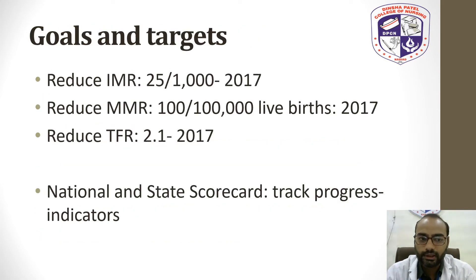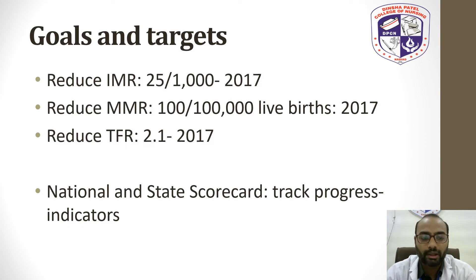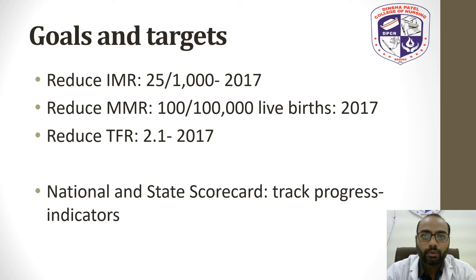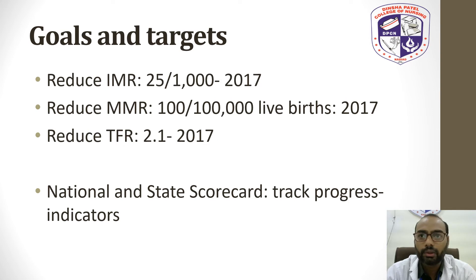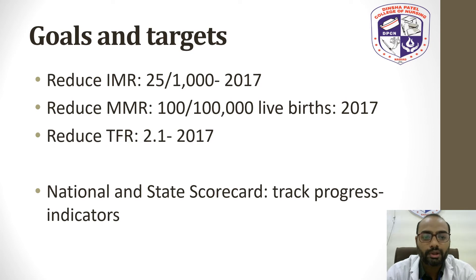The goals and targets of RMNCH+A are: to reduce the Infant Mortality Rate (IMR) to 25 per 1,000 live births by 2017, to reduce the Maternal Mortality Rate (MMR) to 100 per 100,000 live births by 2017, and to reduce the Total Fertility Rate (TFR) to 2.1 by 2017.